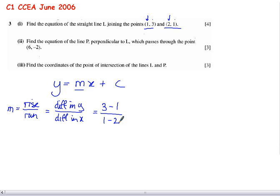Otherwise, we'll get a positive answer when we should be negative. So 3 minus 1 is 2, 1 minus 2 is negative 1. And so our gradient in this case is negative 2.